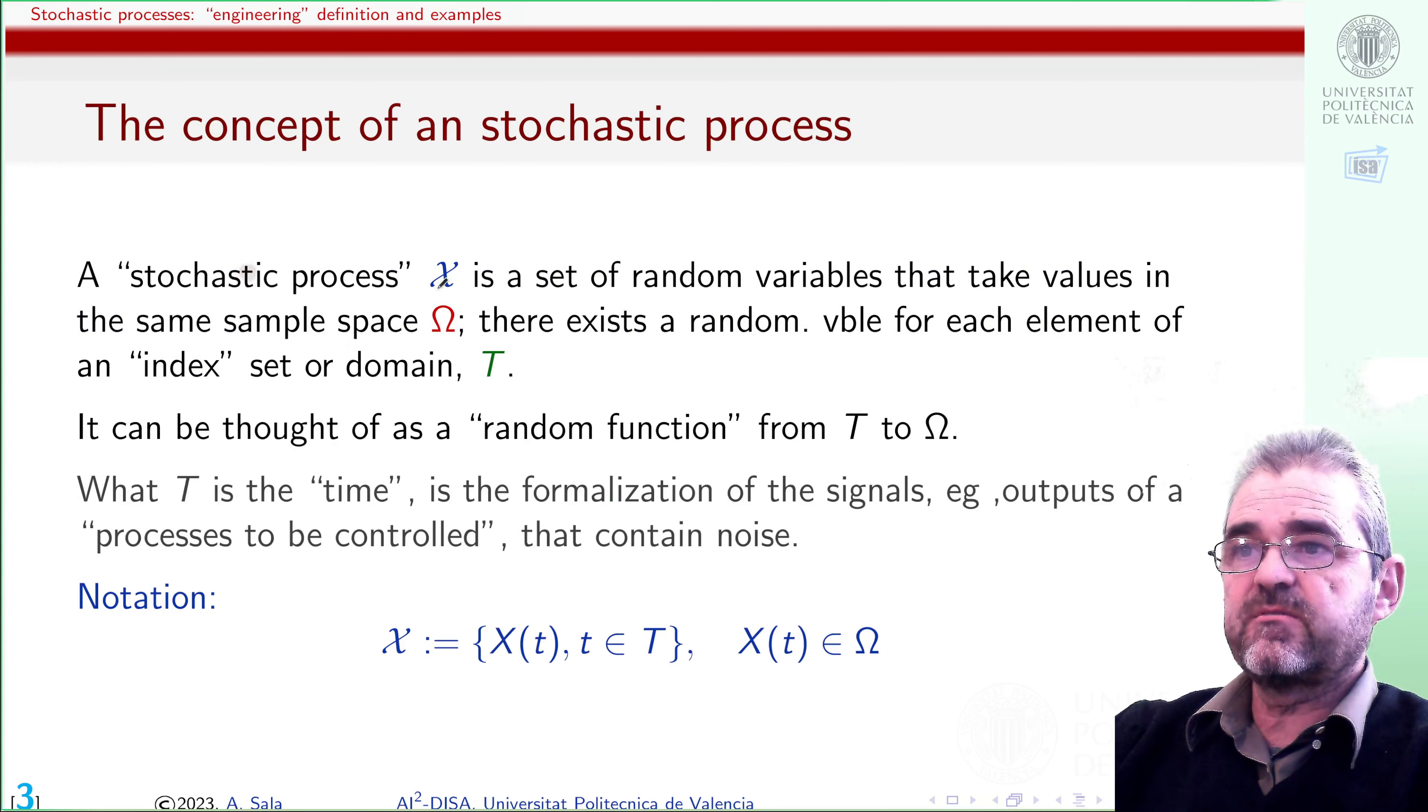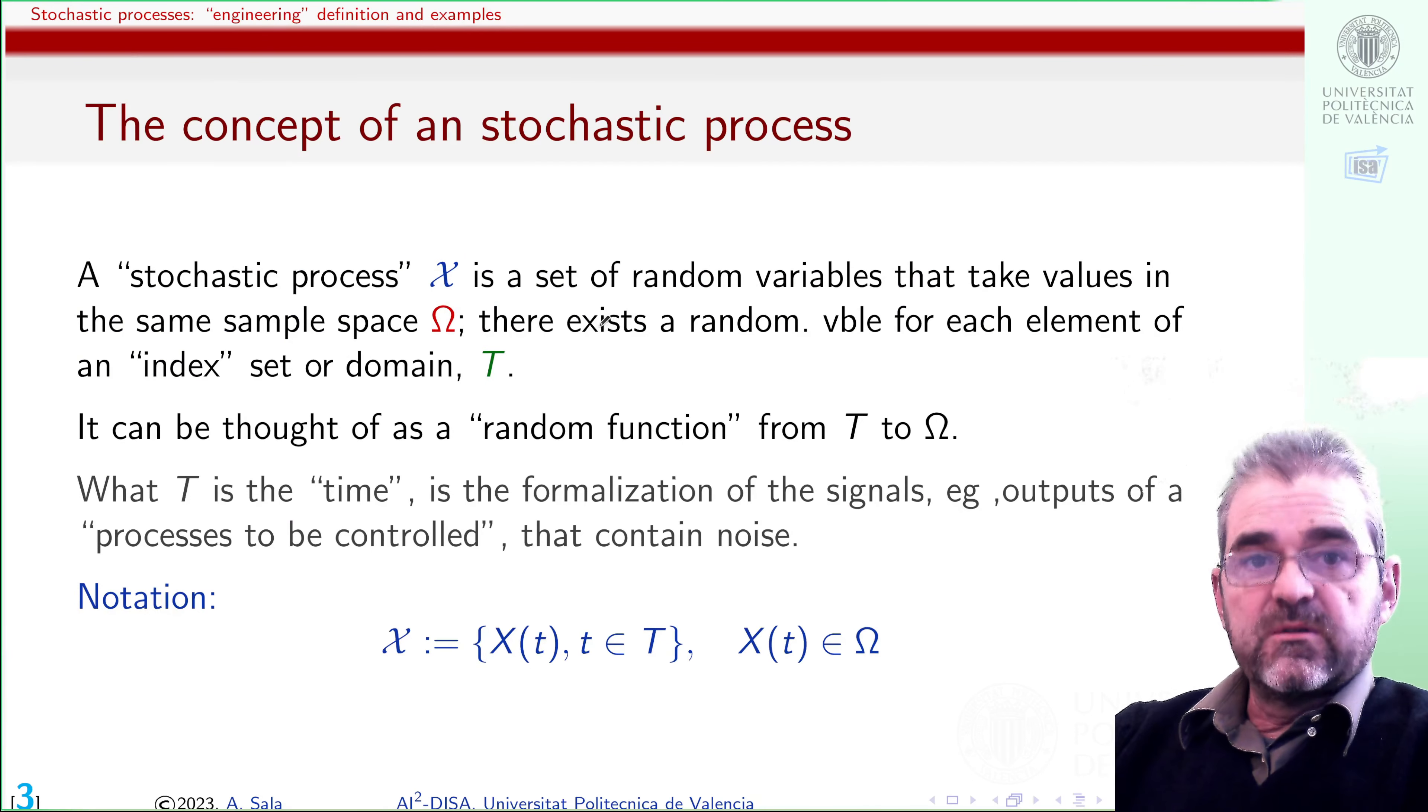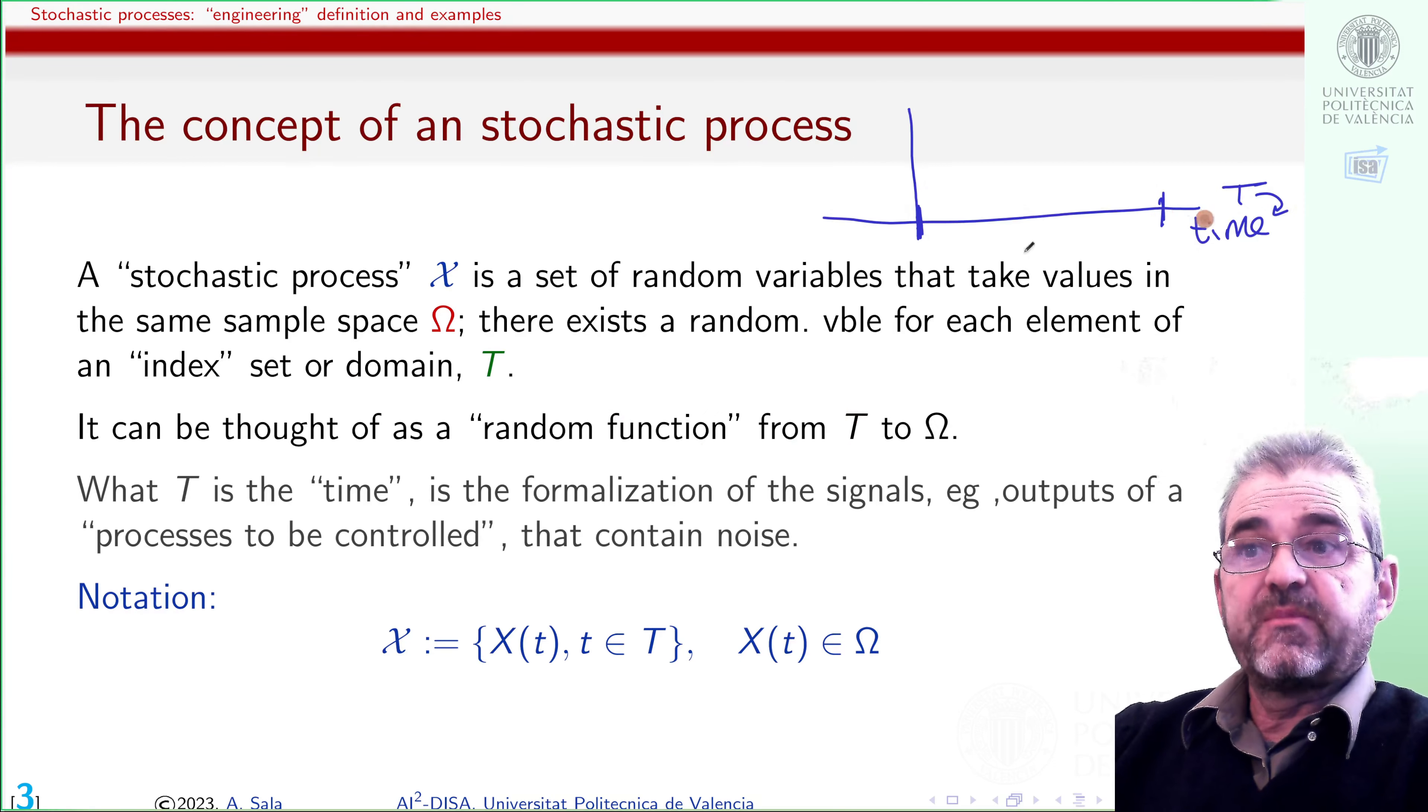In an abstract definition, a stochastic process, this calligraphic x, is a set of random variables that take values in some sample space Ω. And that set is somehow ordered or arranged because there is an index set, capital T. In other terms, it's a sort of random function from capital T to Ω. For instance, we may understand capital T as an interval of time between 0 and 24 hours. And the stochastic process can be a temperature reading every minute.